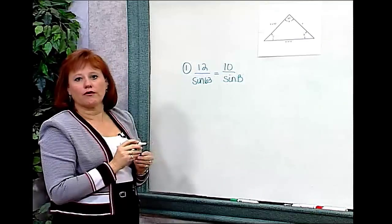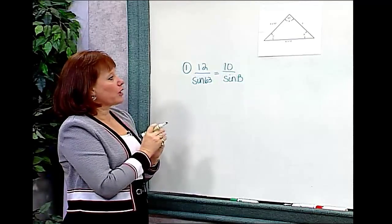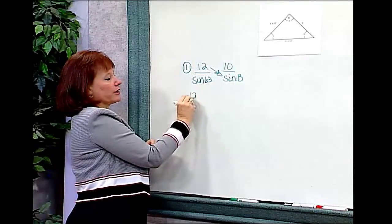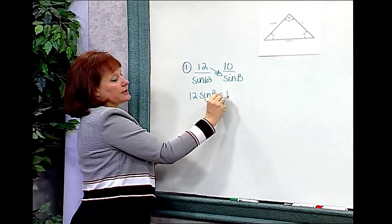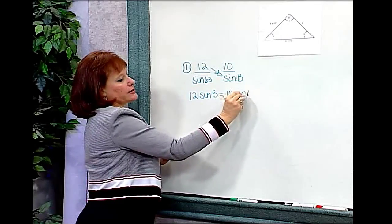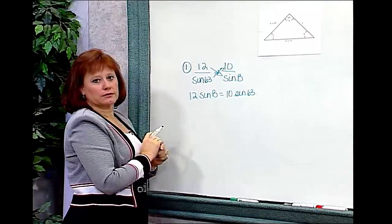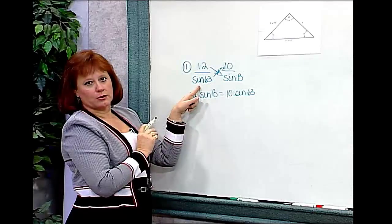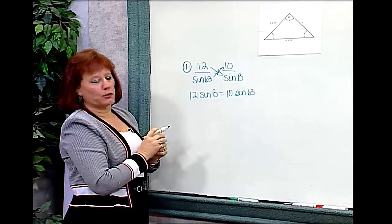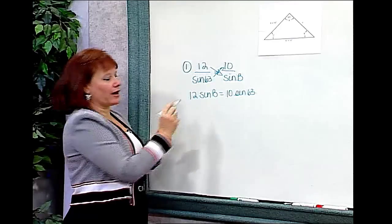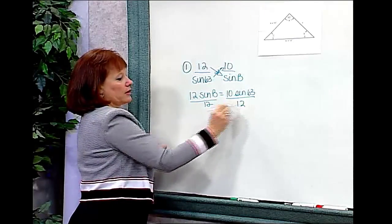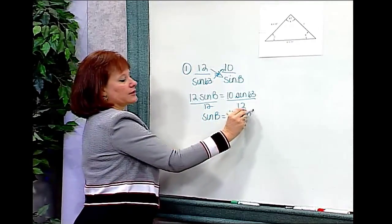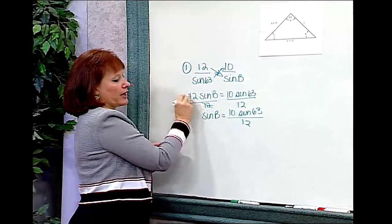To solve this, I cross-multiply. Multiplying across, I get 12 times sine B equals 10 times sine 63. To isolate B, I divide both sides by 12, giving me: sine of B equals 10 times sine 63 over 12, with the 12s canceling out.